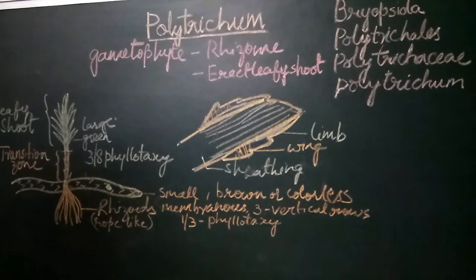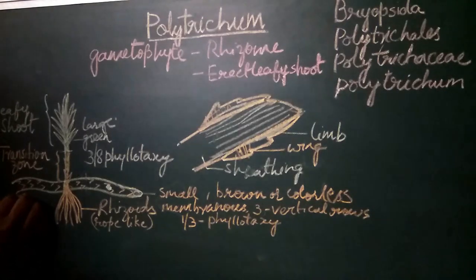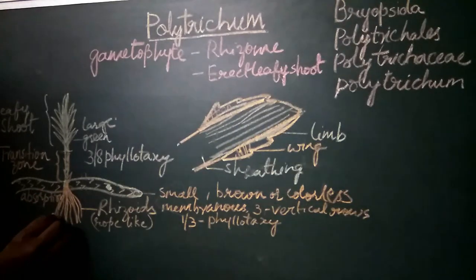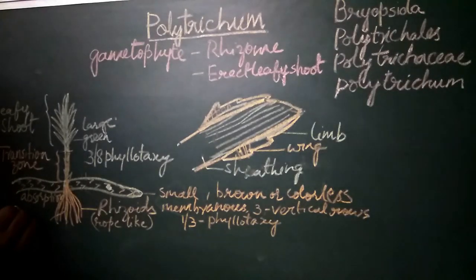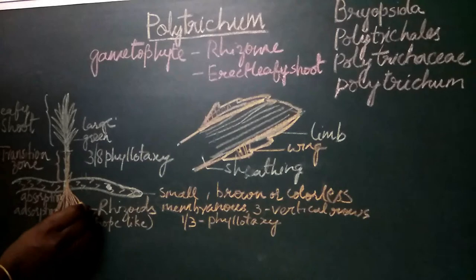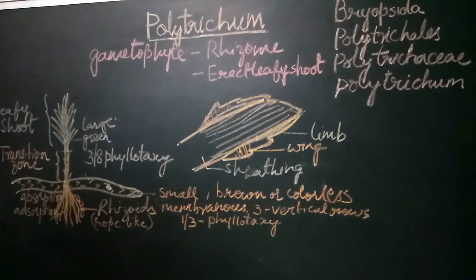The rhizoids help in fixing the plant to the substratum and also in conduction of water. Water conduction is by two methods: one is by absorption, where water enters into the cells of the rhizoids and from there into the shoot system; the other method is by adsorption, where water molecules adhere to the surface of the rhizoids and are transported to the shoot system by capillary action.